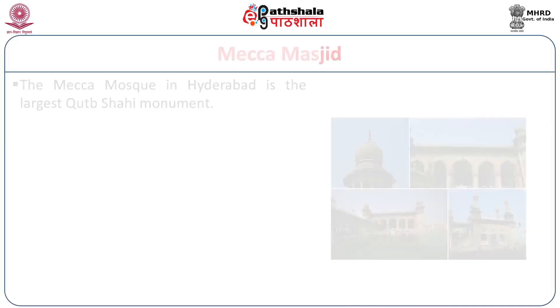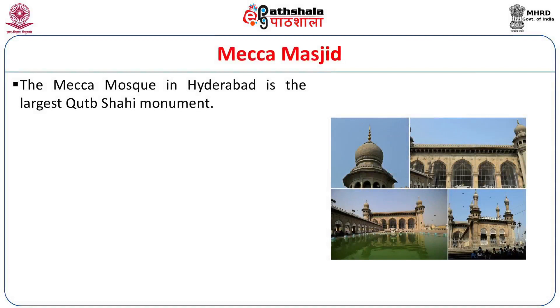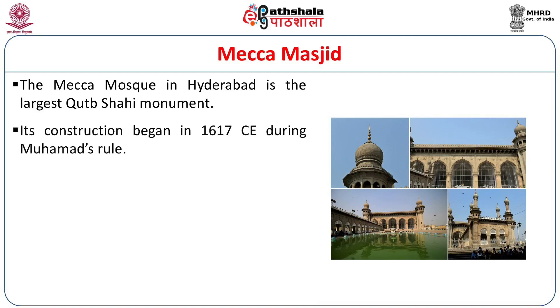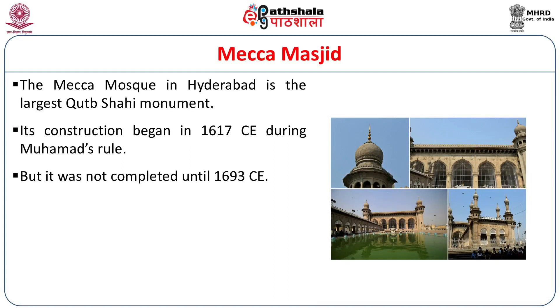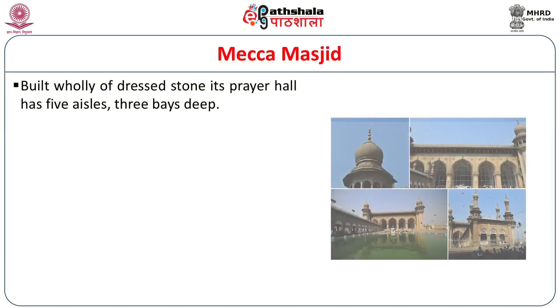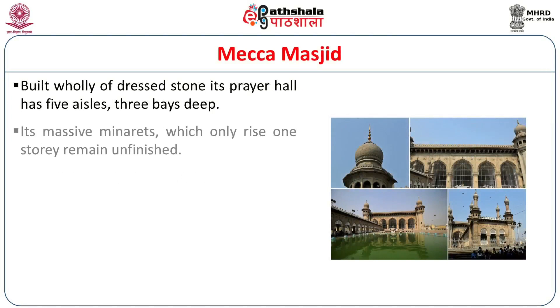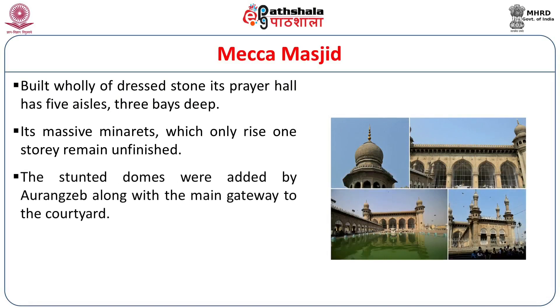Makkah Masjid, located very close to the Charminar, is the largest Qutub Shahi monument. Its construction began in 1617 during Muhammad's rule but was completed in 1693 CE — taking about 80 years to complete. Built wholly of dressed stone, its prayer hall has five aisles and three bays deep. Its massive minarets remain unfinished. The stunted domes were added by Aurangzeb, along with the main gateway to the courtyard.